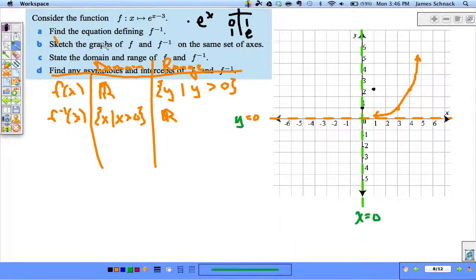And to graph f inverse, I don't even need an equation guys. We just flip-flop the domain and range. This point right here (3,1) becomes (1,3).